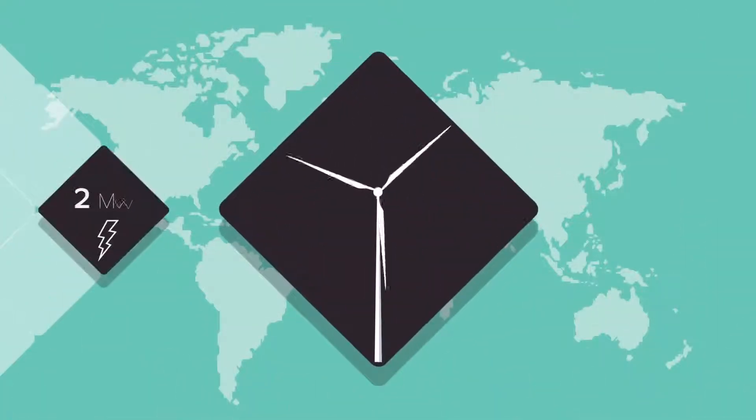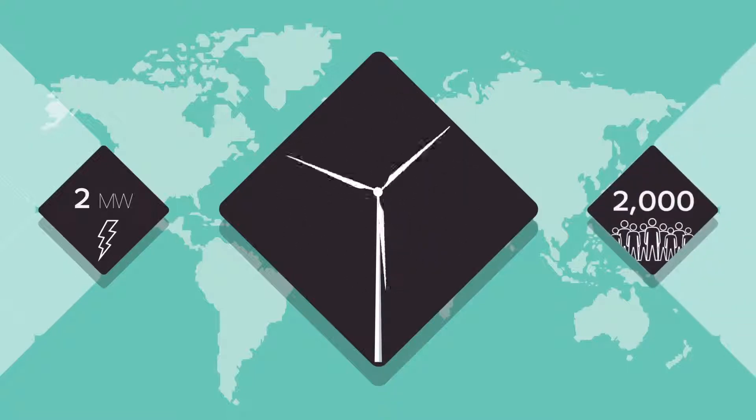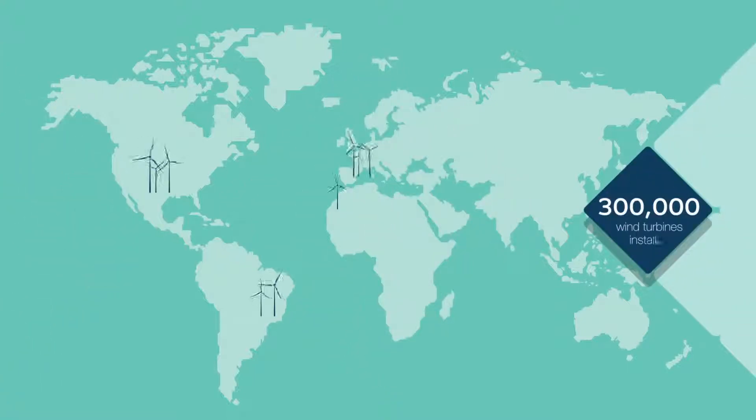A single 2 megawatt wind turbine generates enough electricity annually to meet the needs of 2,000 people. This means that the 300,000 wind turbines installed around the globe provide electricity for millions of individuals.